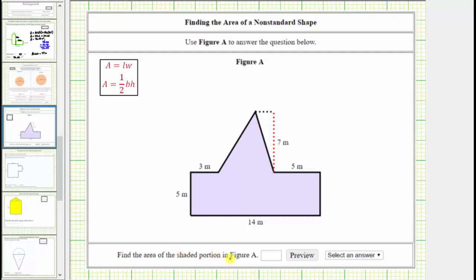We want to find the area of the shaded portion in figure A, which means we want to find the area of this polygon. We need to recognize there's not a single formula we can use to find this area, but what we can do is break this up into two areas, and then the sum of the two areas will give us the area of the polygon.